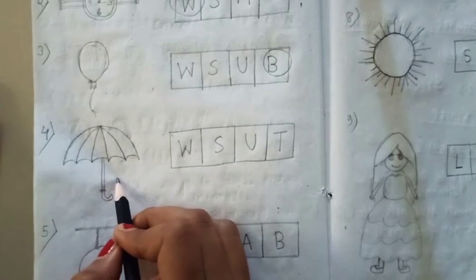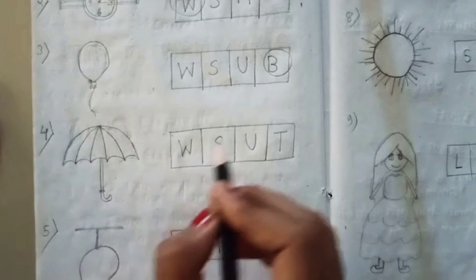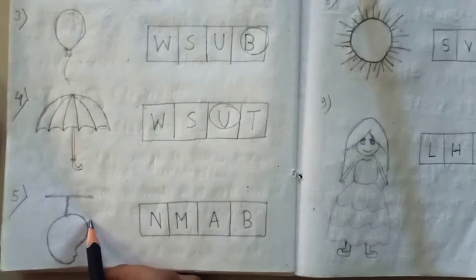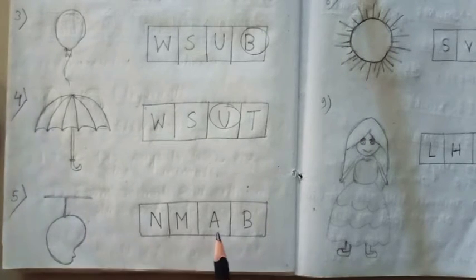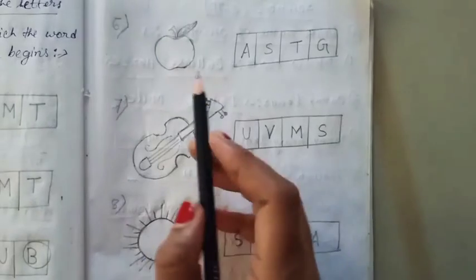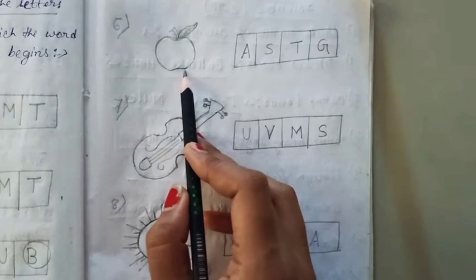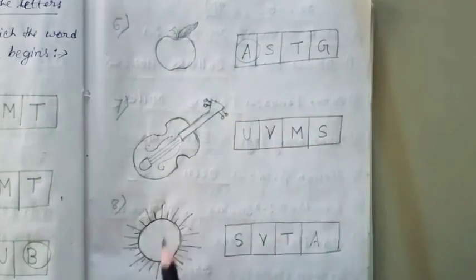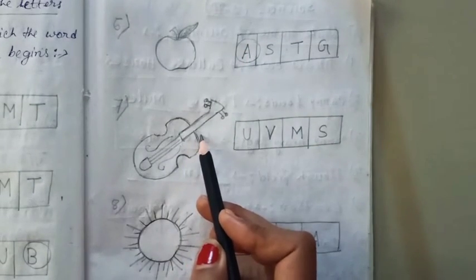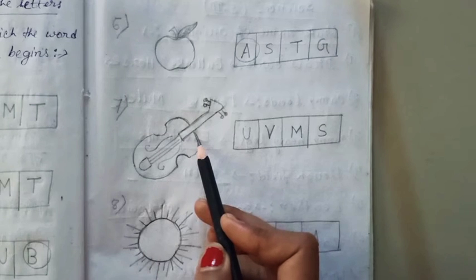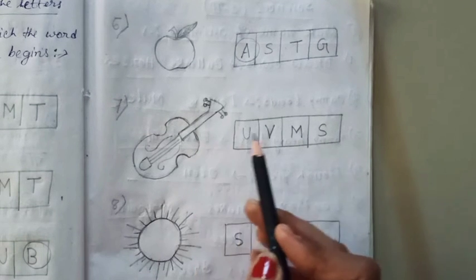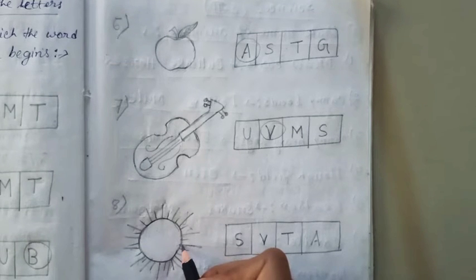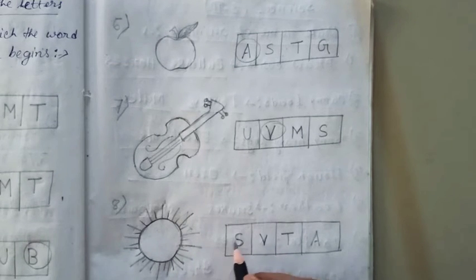What is this? This is an umbrella. Circle U. What is it? It is a mango. Circle M. What is it? It is an apple. Circle A. What is it? It is a violin. Circle V. What is it? It is the sun. Circle S.